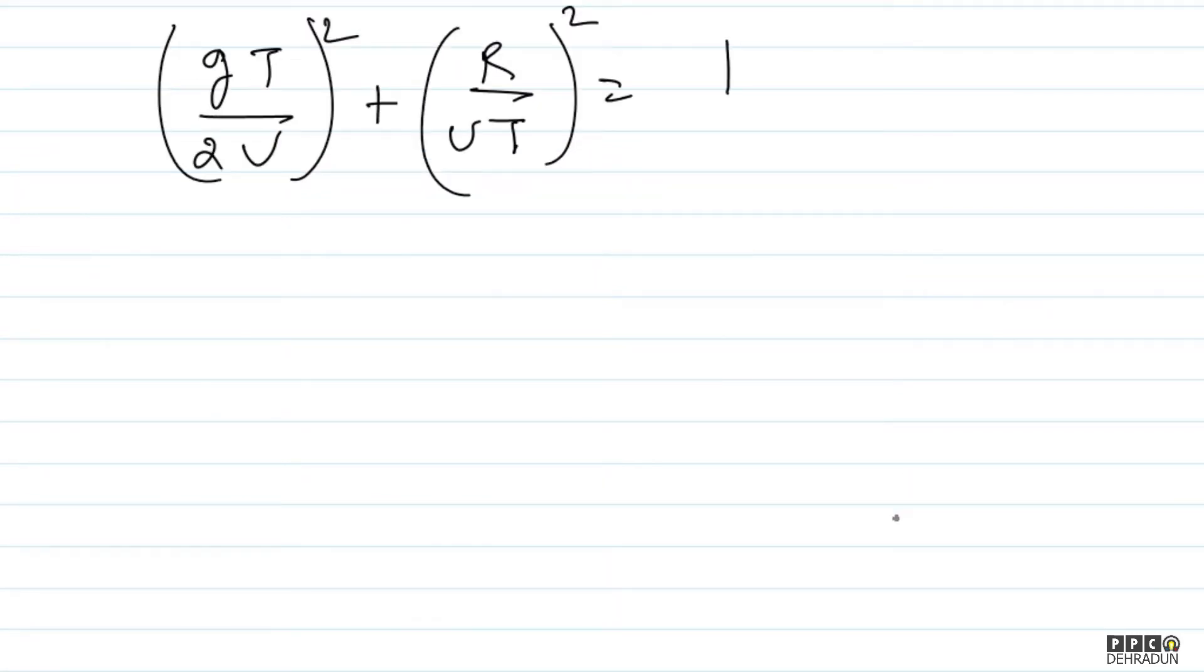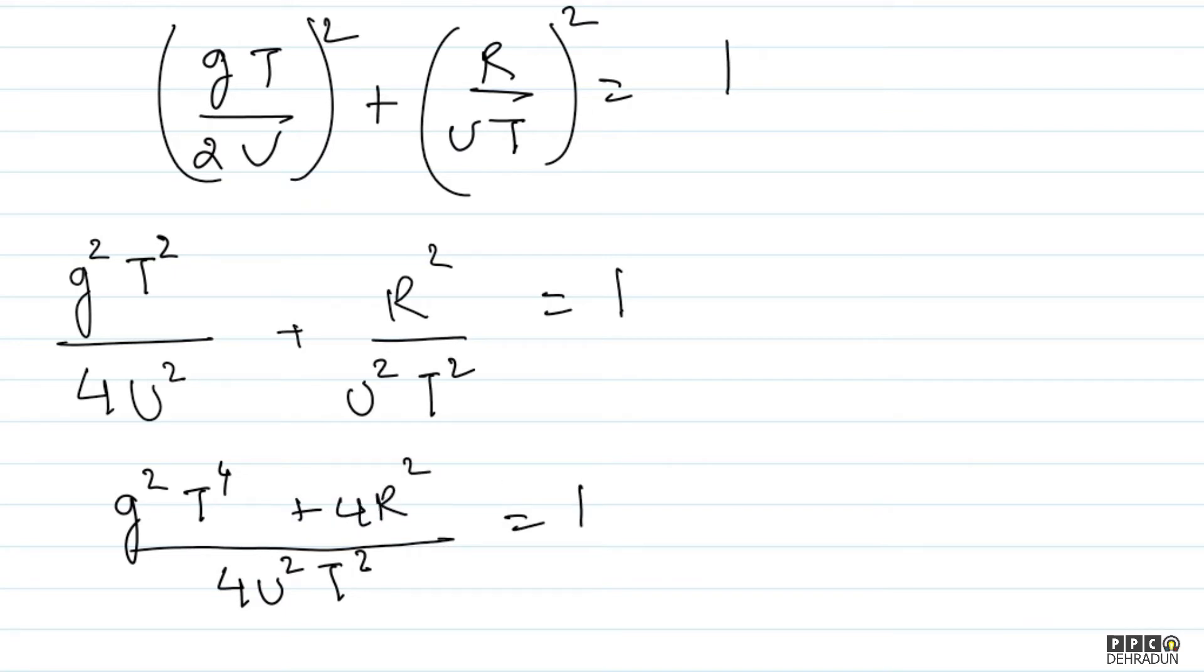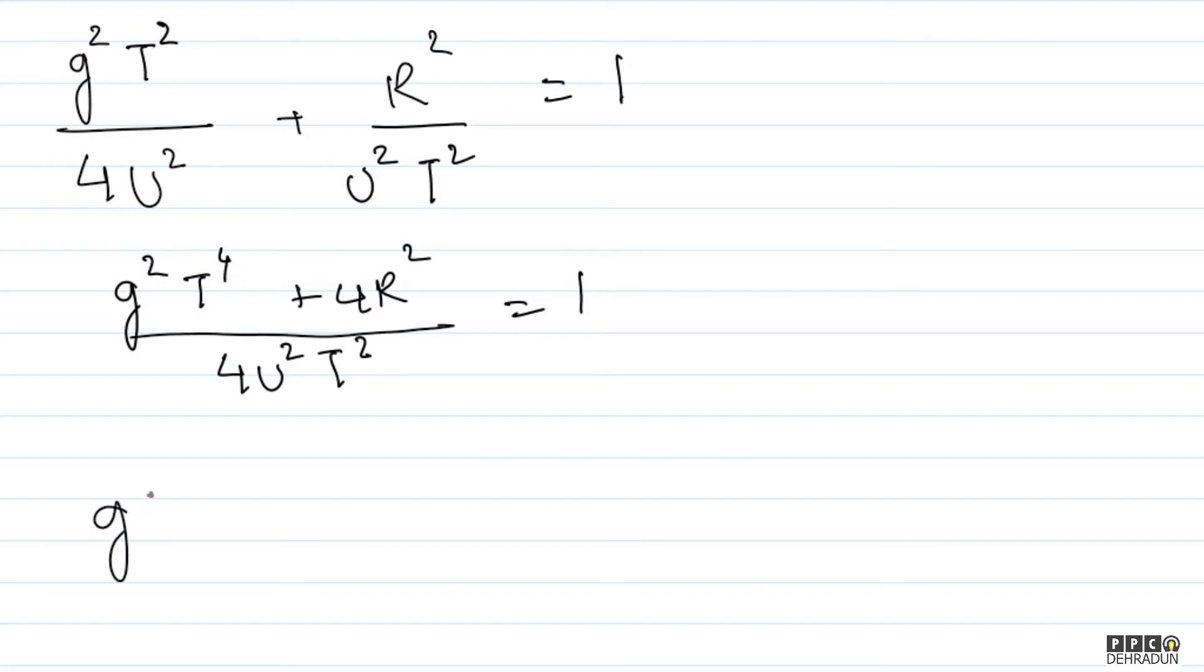So let's solve this. If we open this equation, what will we get? g square t square whole divided by 4u square plus r square upon u square t square equals 1. Now, let's take LCM as 4u square t square. Then we get g square t to the power 4 plus 4r square equals 4u square t square. From here we get g square t to the power 4 minus 4u square t square plus 4r square equals 0.